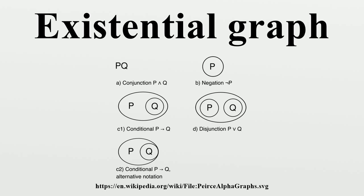A dot asserts the existence of some individual in the domain of discourse. Multiple instances of the same object are linked by a line, called the line of identity.